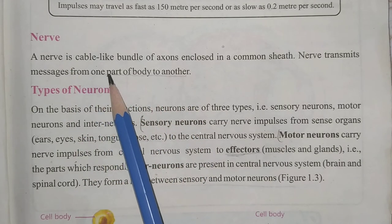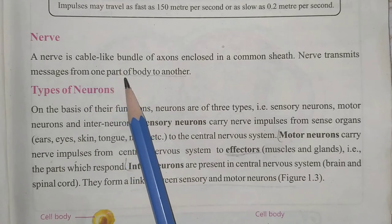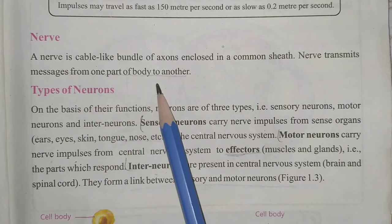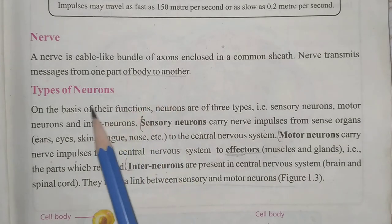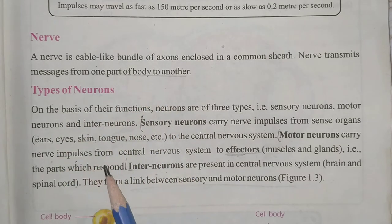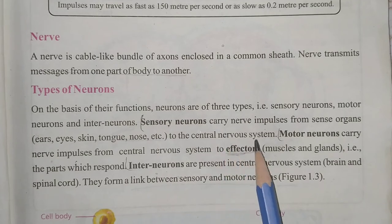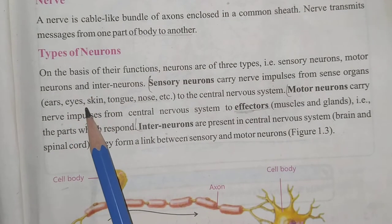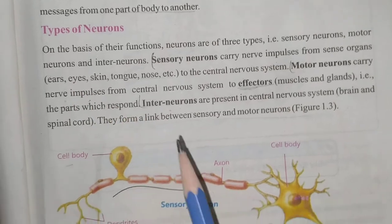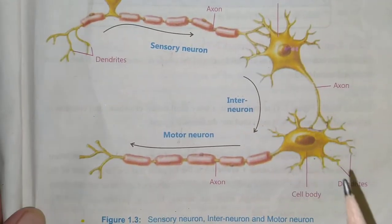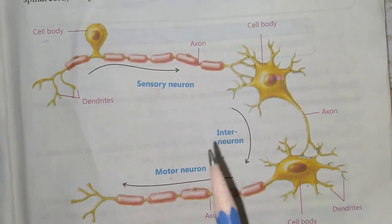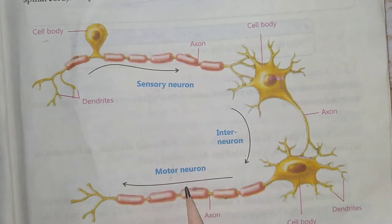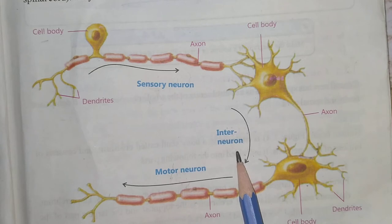A nerve is a cable-like bundle of axons enclosed in a common sheath; it transmits messages from one part of the body to another. On the basis of their function, neurons are of three types. In this diagram you can see the types of neuron. The first one is sensory neuron, the second is motor neuron, and the third is interneuron.